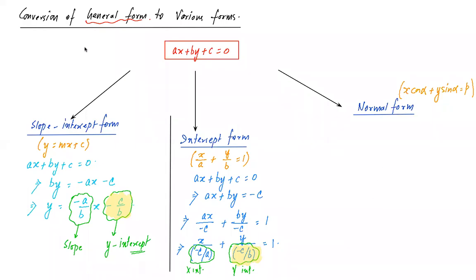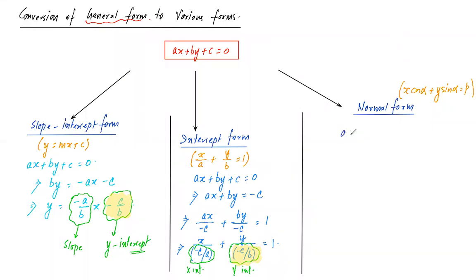Now the most important: converting general form to normal form. Starting from ax + by + c = 0, first shift the constant to the right: ax + by = −c. The right-hand side represents the perpendicular distance, which must be positive, so we divide throughout by a factor. That factor is the square root of (coefficient of x)² + (coefficient of y)², which here is √(a² + b²).